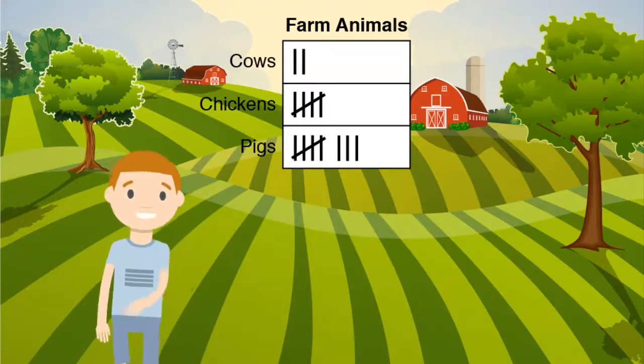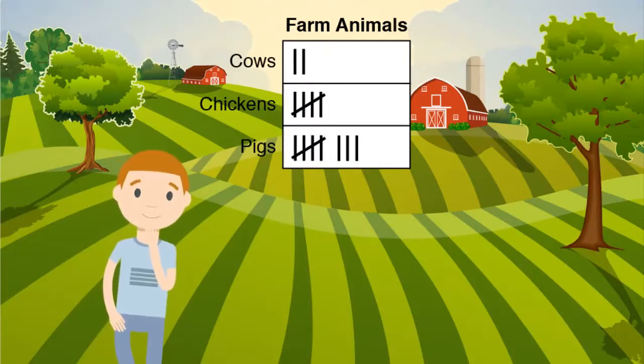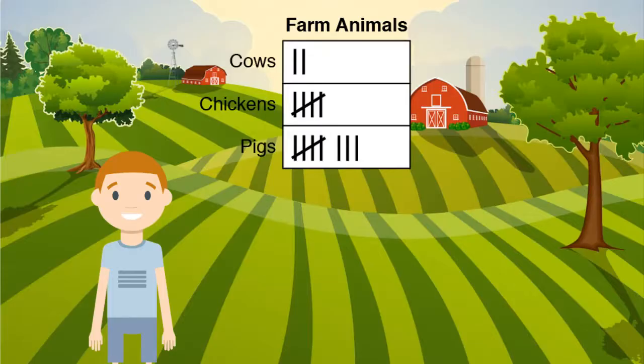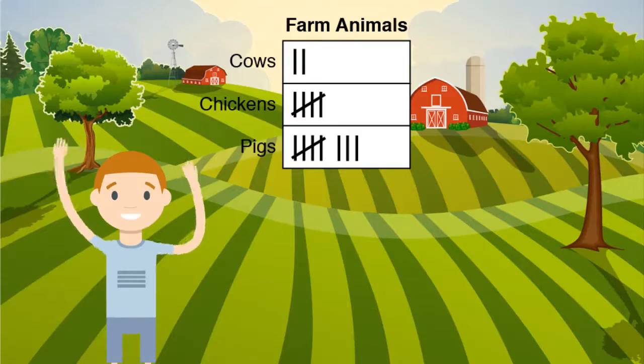We can also look at this tally chart to answer questions. Does my friend have more chickens or cows on her farm? She has more chickens than cows. Five chickens is more than two cows.